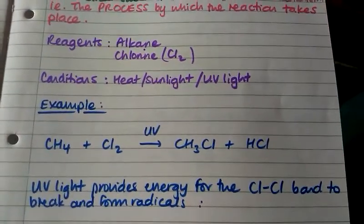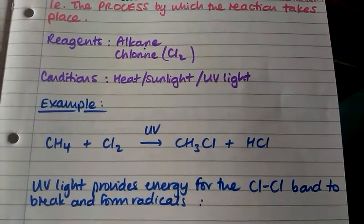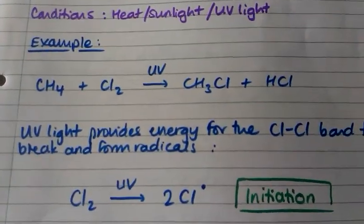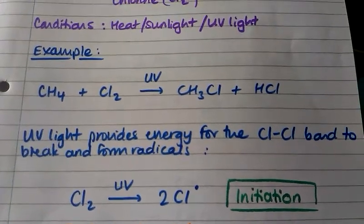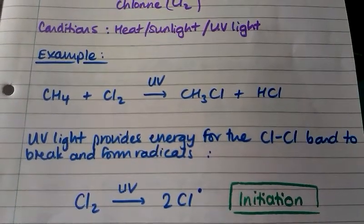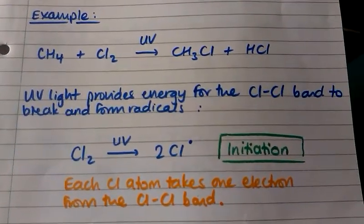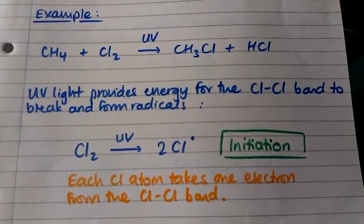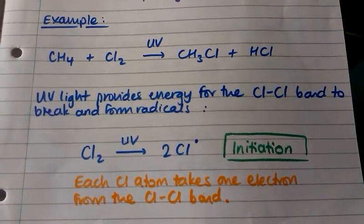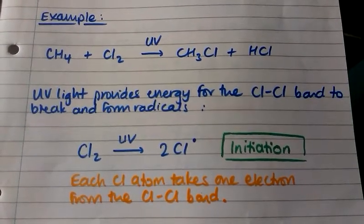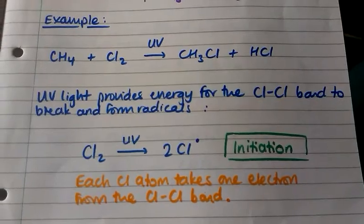The UV light provides energy for the chlorine single bond to break and form radicals. So a chlorine molecule, Cl2, in the presence of UV light forms two chlorine radicals, and this is called the initiation step. Each of the chlorine atoms in the molecule takes one electron from the chlorine-chlorine bond, and the single electron is denoted by a dot next to the chlorine.